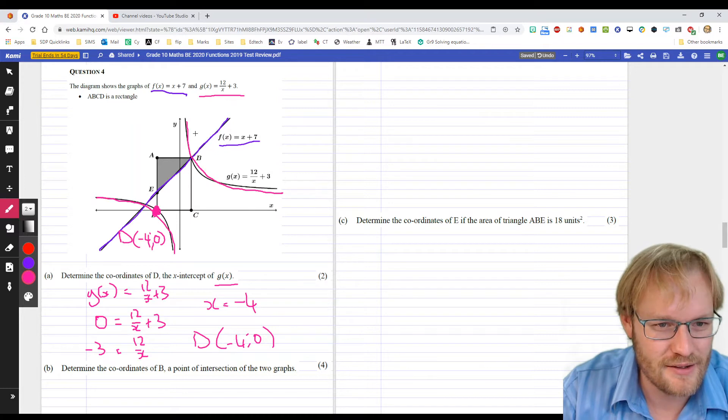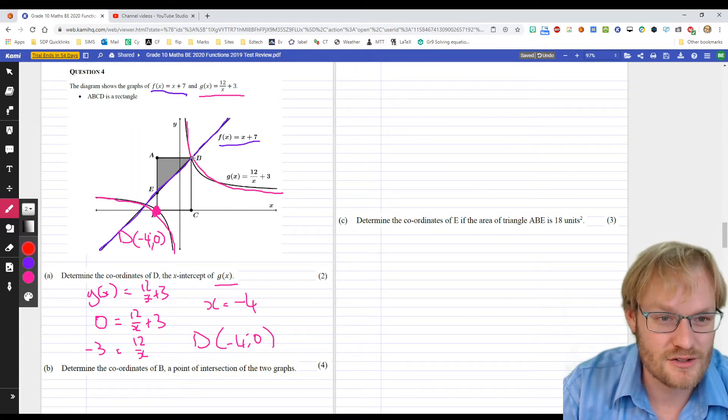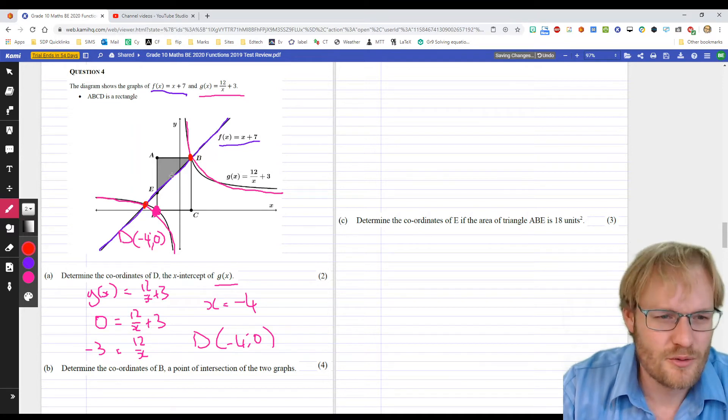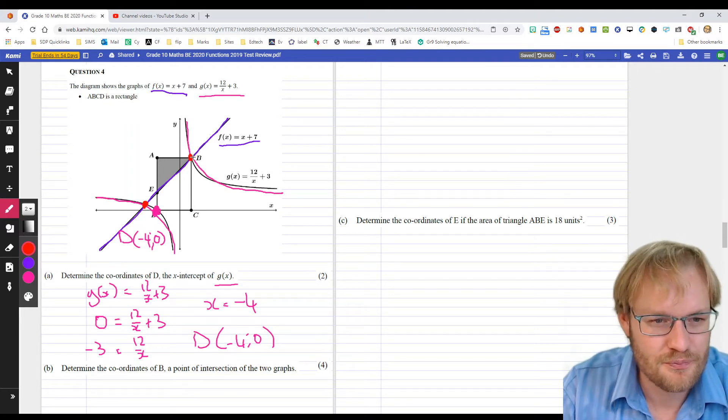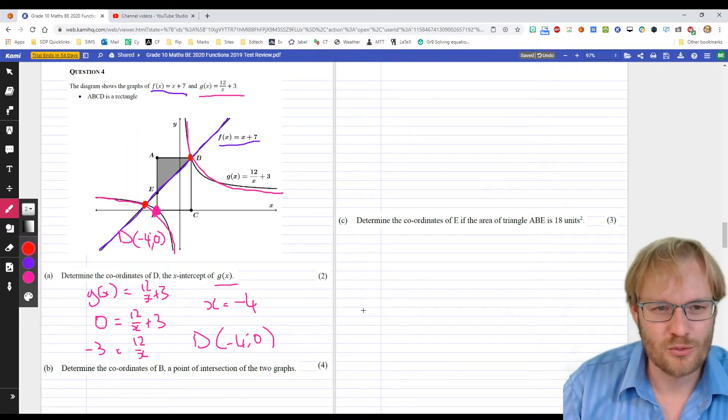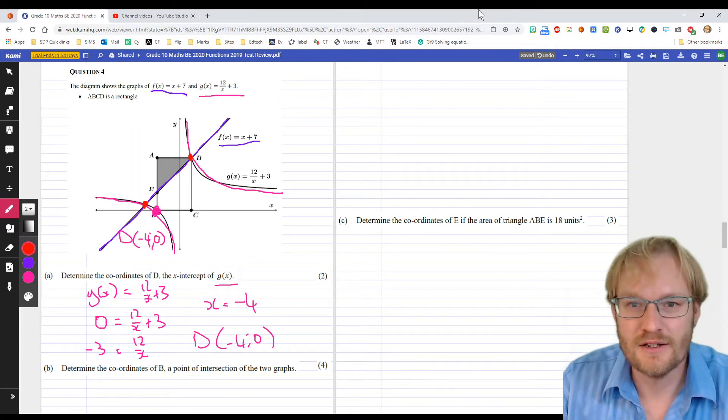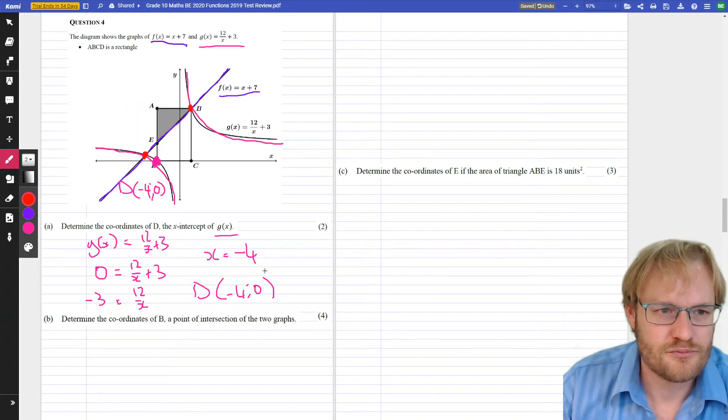Okay, determine the coordinates of B. B is up here, point of intersection of the two graphs, so where they equal each other. I can see that they also equal each other down here, so we might end up getting two answers and then having to interpret it to say, well, we want this one up here. Let's make this nice and bigger.